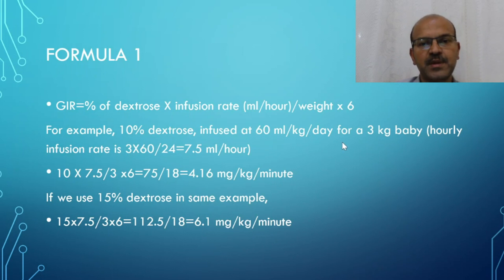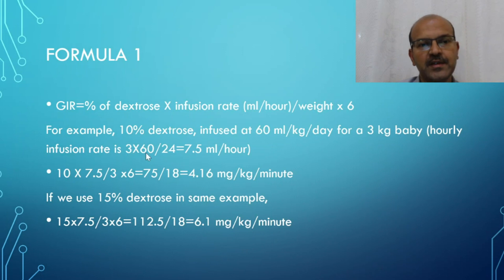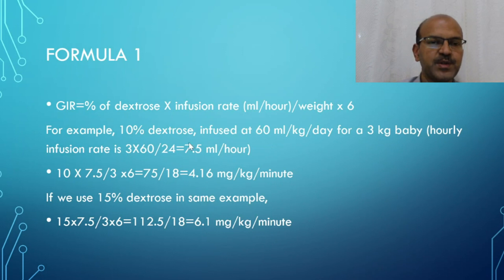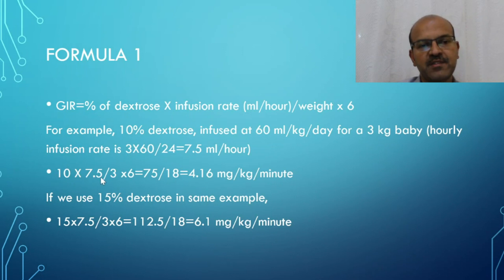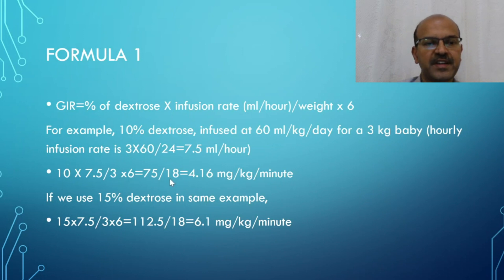For example, if 10% dextrose is infused at 60 ml/kg/day for a 3 kg baby, the hourly infusion rate is weight × ml/kg/day ÷ 24 = 3 × 60 ÷ 24 = 7.5 ml/hour. Once you have this, multiply dextrose strength (10%) × 7.5 ml/hour, divided by weight (3 kg) × 6.